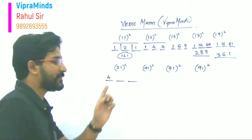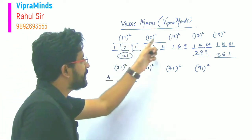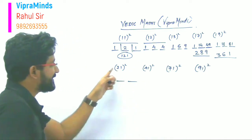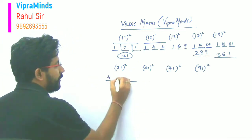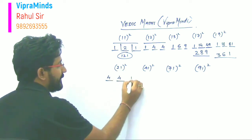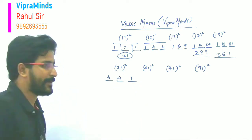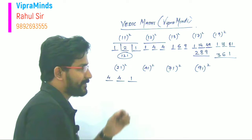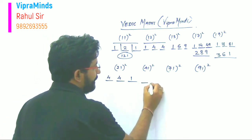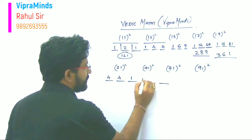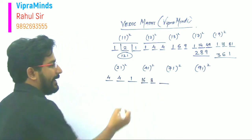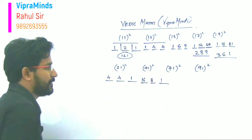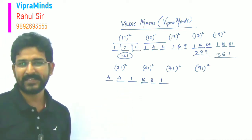Now 41 ka square. Same, what will you do? Four ka square is 16, then four plus four double, that is eight, and unit place that is one. So 1681 will be the square of 41.